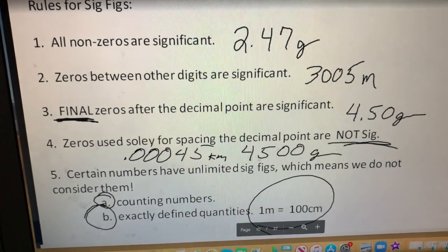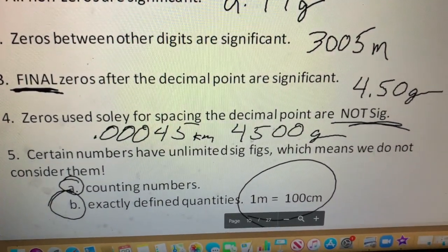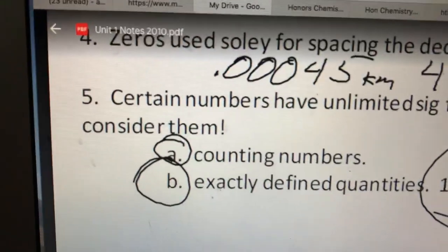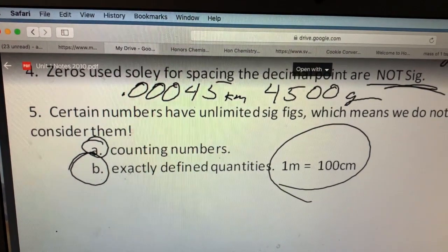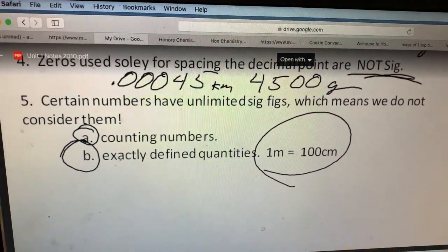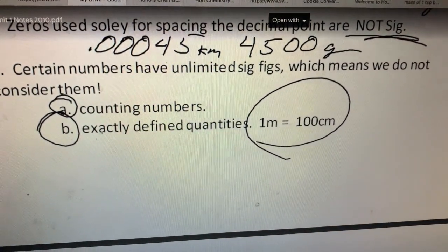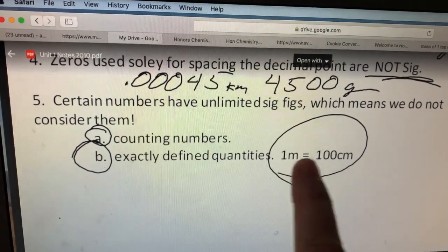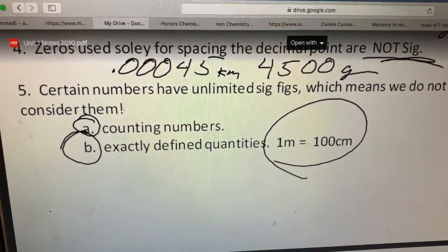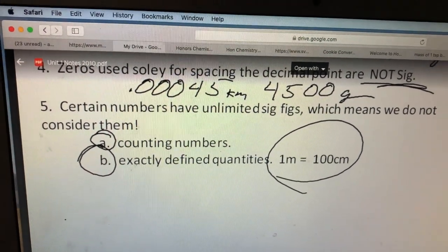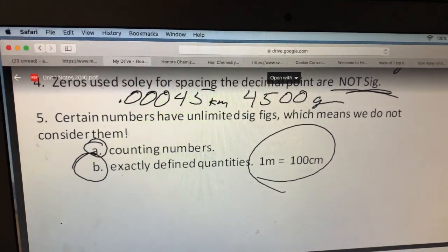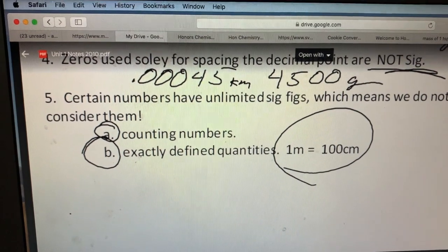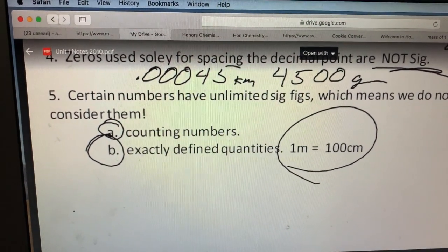There are certain numbers that you won't ever have to worry about significant figures, which means that you'll use them mathematically in a problem but you won't count them when it comes to significant figures. Counting numbers. If for example I was in class and I counted all of the students, that's not a measurement, that's just counting, right? Exactly defined quantities. Anytime I give you a conversion factor, in one meter there's 100 centimeters. That's not a measurement I made, that's just a conversion. You use those mathematically but you don't worry about them in terms of significant figures. Okay, you have a couple examples in your notes. Pause the video and please write how many significant figures you think are in each of those values.